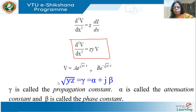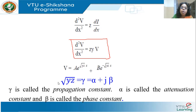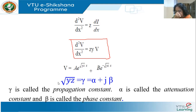The solution for d²V/dX² = ZY·V is: V = A·e^(sqrt(YZ)·X) + B·e^(-sqrt(YZ)·X), where A and B are arbitrary constants — not the generalized line constants A, B, C, D. They are just coefficients in the general solution of this second-order differential equation.